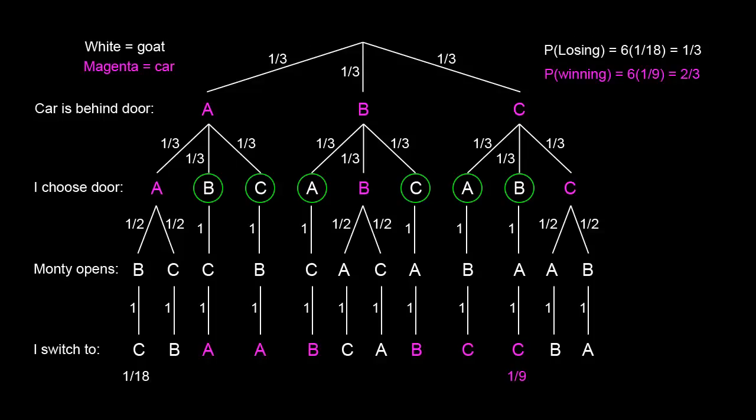So the probability of winning is simply the probability that my first pick is a goat. And obviously that probability is two-thirds. And the probability of losing is simply the probability that my first pick is a car, and that probability is one-third.